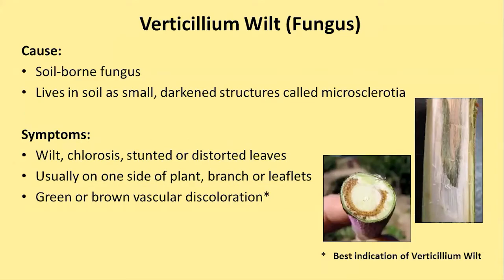Verticillium wilt is a soil-borne fungus, and it lives in the soil already as small dark structures called microsclerotia that we cannot see. Sometimes you have the bad luck of planting a susceptible plant where your soil already has verticillium wilt. A very detailed soil analysis is needed to determine if you have it. The symptoms can be wilting, chlorosis, and stunted or distorted leaves. Usually it starts on just one side of the tree or one branch, and then may take over the complete tree.